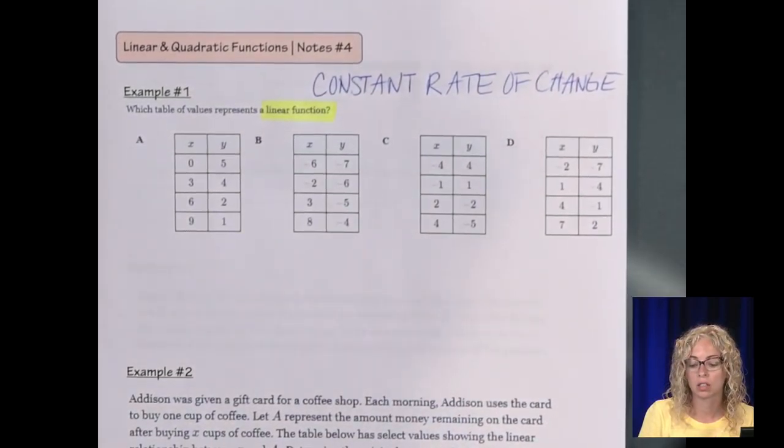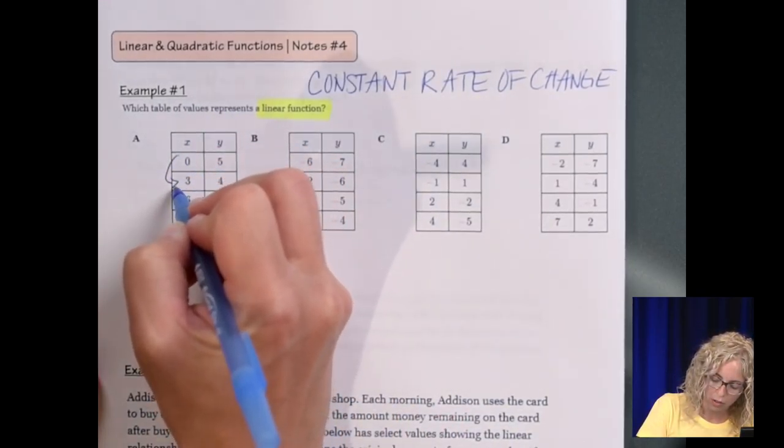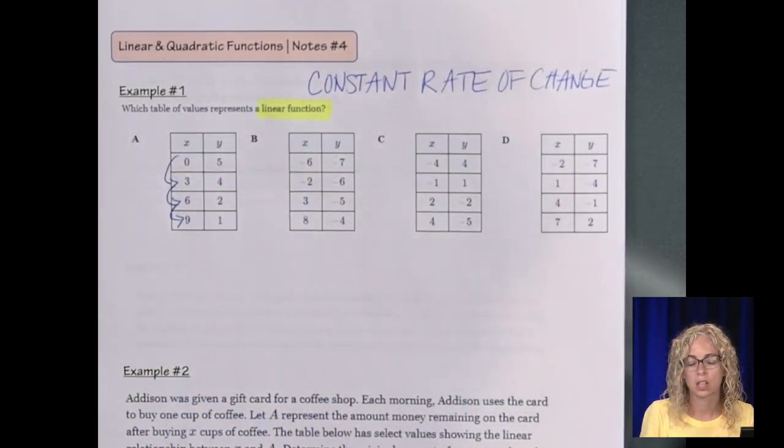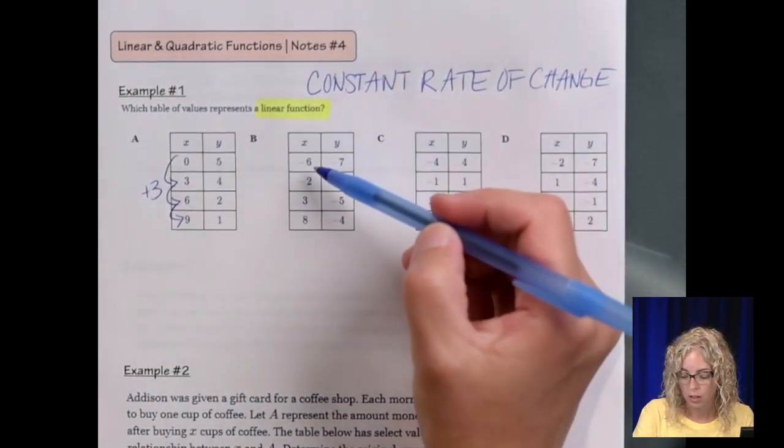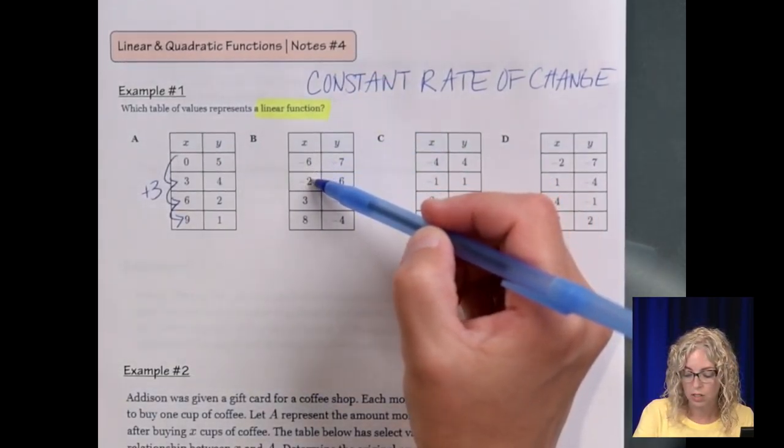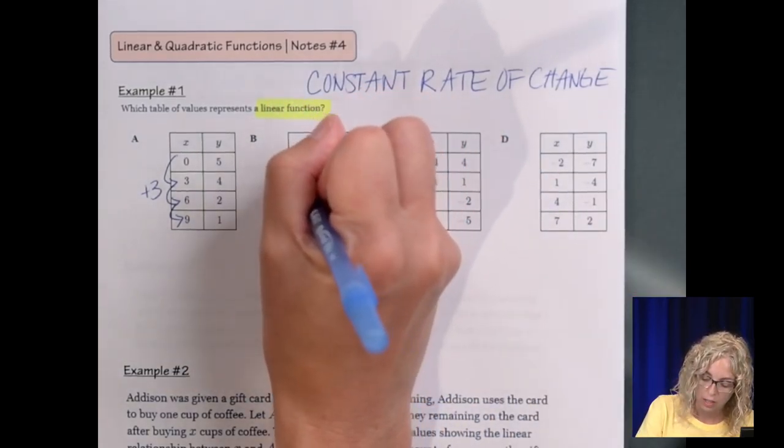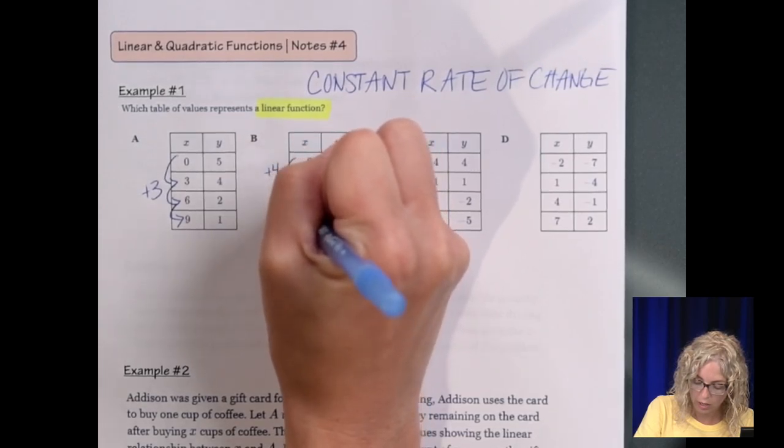The same increase of x as we see all the way through, for each increase of x, it's the same increase for y. Check to see if it's the same increase for x all the way down, so if we go 0 to 3 to 6 to 9, yes, that's an increase of 3. So let's check here. From negative 6 to negative 2, it's an increase of 4. From negative 2 to 3, it's an increase of 5. So it's not the same, but it's not to say it's not right.